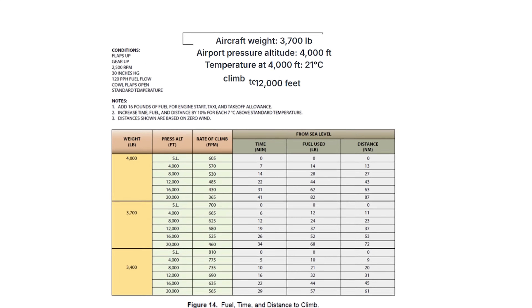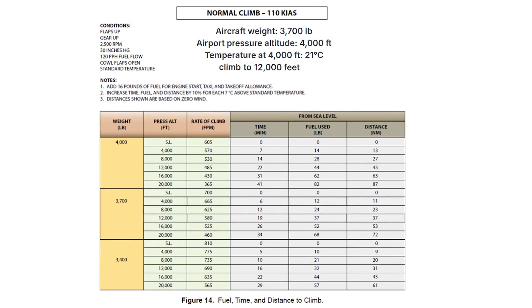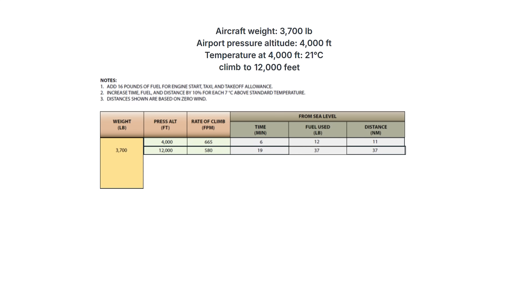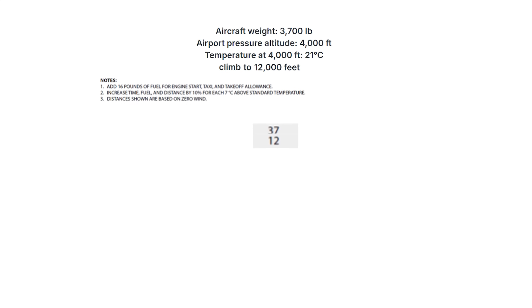This is just an exercise in following the chart step by step. Our aircraft weight is 3,700 pounds, so we're looking at the middle of the chart. We're climbing to 12,000 feet, but we're starting at 4,000, so we want to know the figures for both of those altitudes. What we want to do is take the fuel burned climbing from sea level to 12,000 feet and subtract the fuel burned going from sea level to 4,000 feet, since we're already starting there at 4,000.